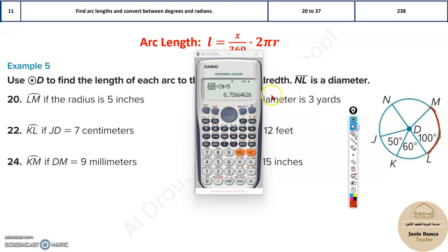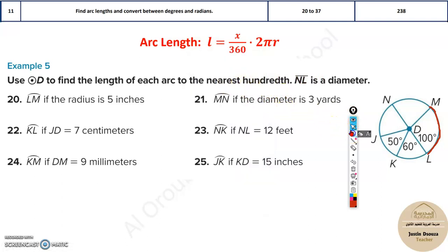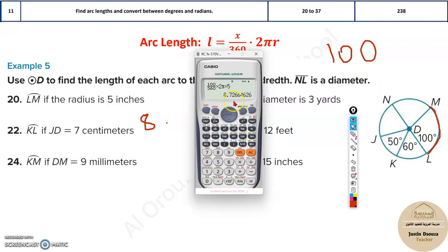See, now they have also told rounded to the nearest hundredth. Hundredth means it has two zeros, right? So after the decimal point, that is 8 point, there must be two digits. Let's see.